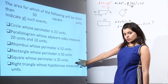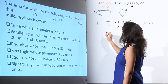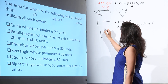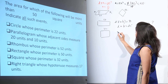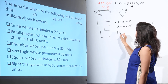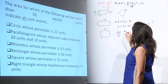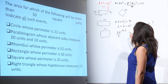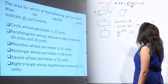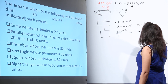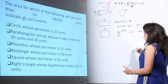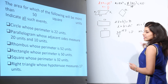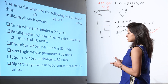Then we have a square whose perimeter is 32 units. That means one side will be 32 / 4 = 8. The area in this case will be 8² = 64. So we can say that yes, this square has an area which is more than 50 square units.